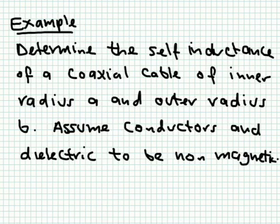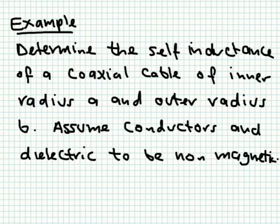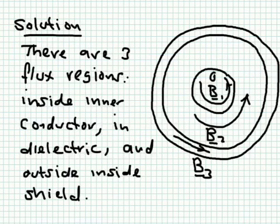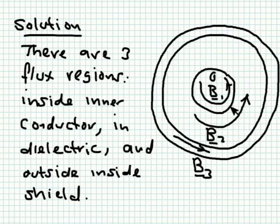We consider one more example: calculating the self-inductance of a coaxial cable of inner radius A and outer radius B, assuming the conductors and dielectric to be non-magnetic. Even though this is not a mutual inductance problem, it has two conductors and is instructive. The coaxial cable has three regions: inside the inner conductor, the dielectric region between the inner conductor and the shield, and inside the shield itself.